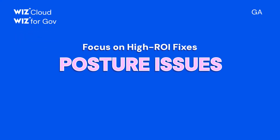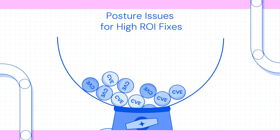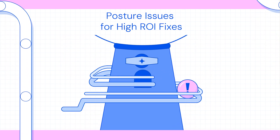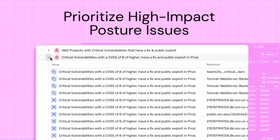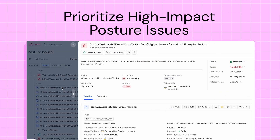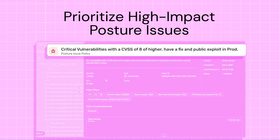Next up, I'm excited to introduce Posture Issues, now in GA. Posture Issues help you address findings with high ROI fixes by grouping findings within a single domain, such as vulnerabilities, secrets or data, to allow you to plan a single fix that resolves multiple findings at once. For example, you can create a posture policy for all vulnerabilities with a CVSS score of 8 or higher that have a fix and a public exploit, and address them as one posture issue. This is how you move away from a noisy list of CVEs to a focused list of high-impact fixes that help you meet SLAs and compliance requirements.